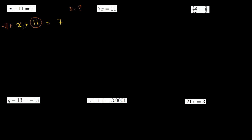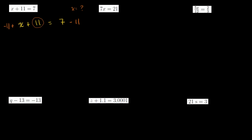If x plus 11 is equal to 7, then x plus 11 minus 11 won't equal 7 anymore — you'll also have to subtract 11 from the 7. I want you to really think about what this equality means. These two things are equivalent quantities, and in order for the equality to hold true, anything I do to one side, I also have to do to the other side. So on the left-hand side, negative 11 plus 11 cancels out, leaving just x.